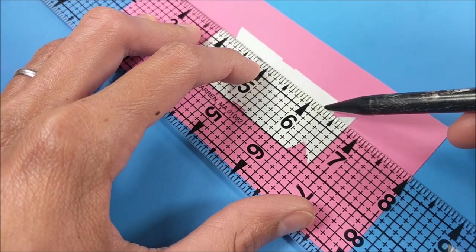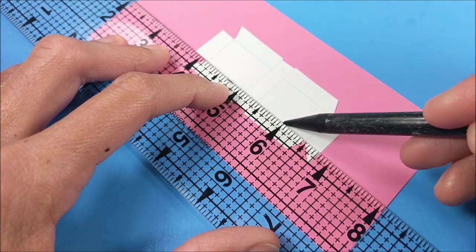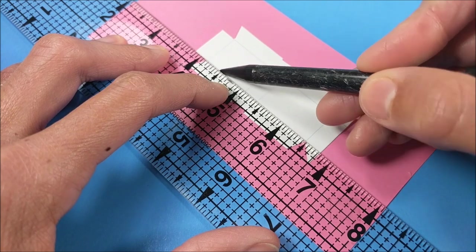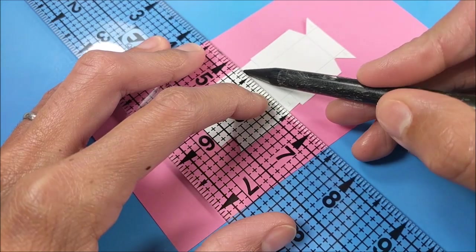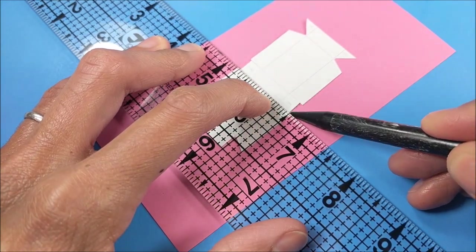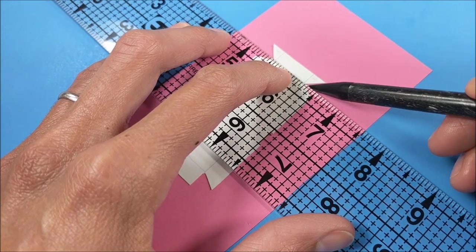I score on all of my lines just using a mechanical pencil with no lead. I want to make sure and score it really well, so I press pretty hard so that it's easier to fold. And I'm folding on all of my lines.